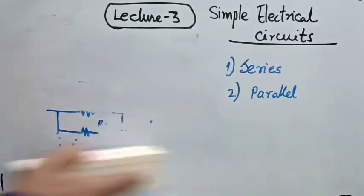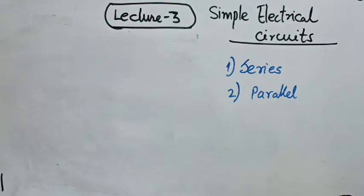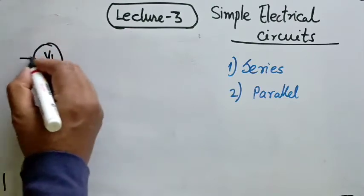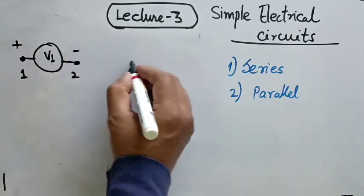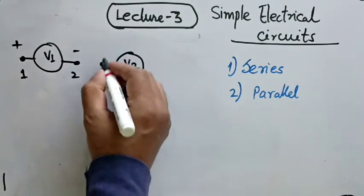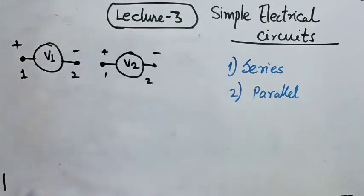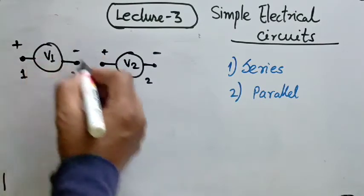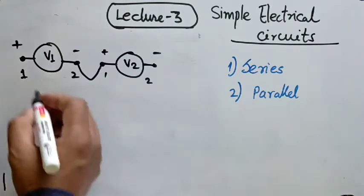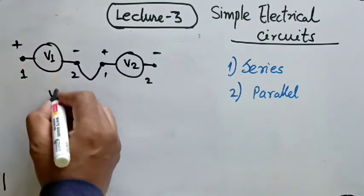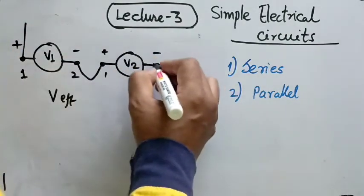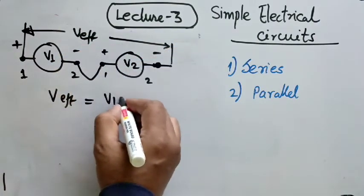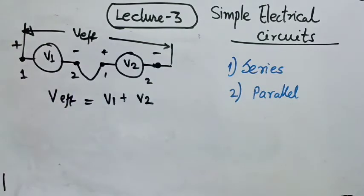Now let us try seeing the same phenomenon of series and parallel with voltage sources. Assuming we take a voltage source V1 with two terminals 1 and 2 — plus and minus — and another voltage source V2 with two terminals, plus and minus. Assuming the terminals are connected in series like this, the effective voltage V_effective between the two terminal points will be V1 plus V2.